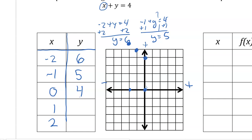Similarly, we solve for x equals 1 and x equals 2. 1 plus 3 is 4, so when x equals 1, y equals 3. 2 plus 2 is 4, so when x equals 2, y equals 2. Then we draw our line.